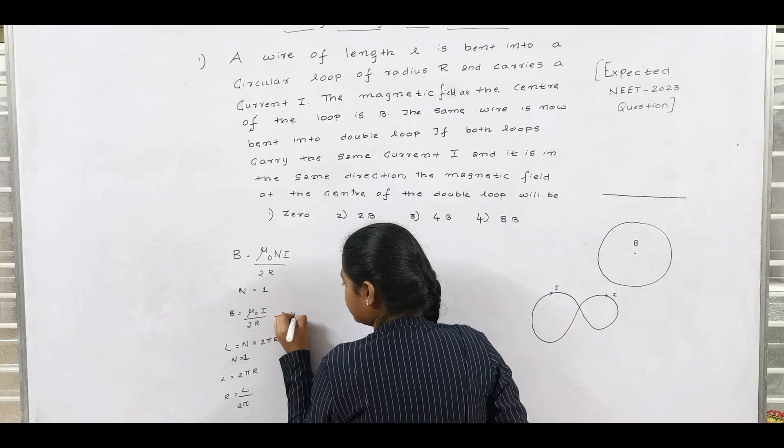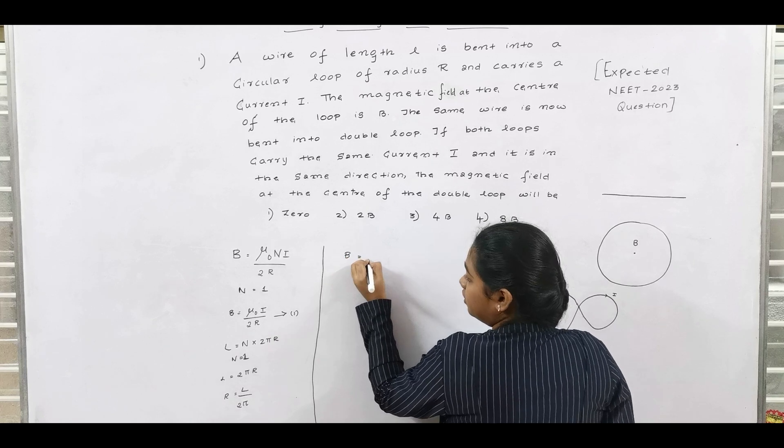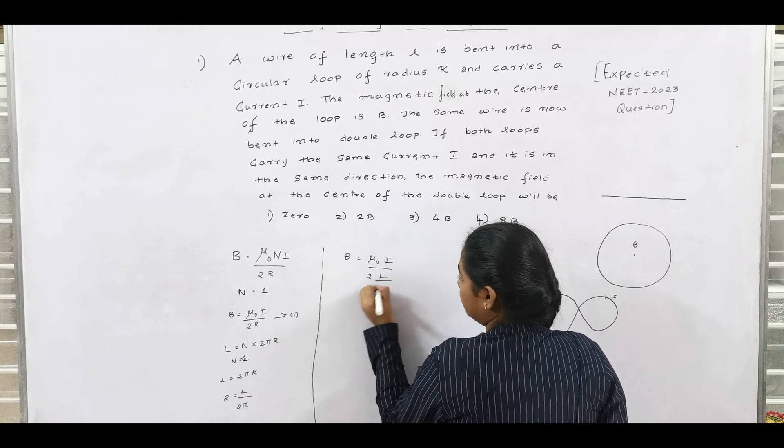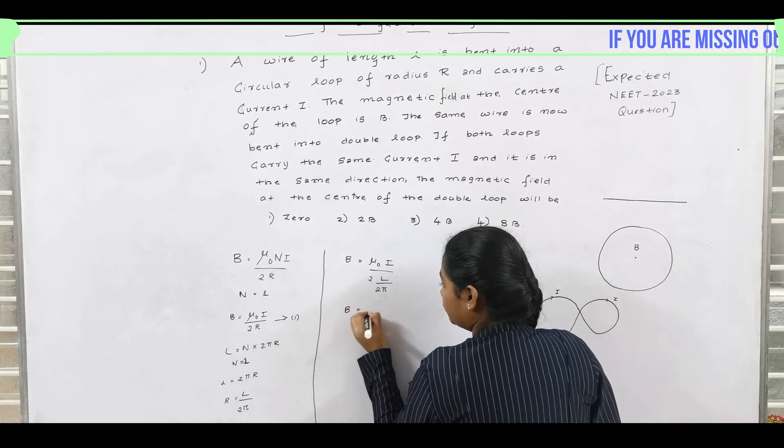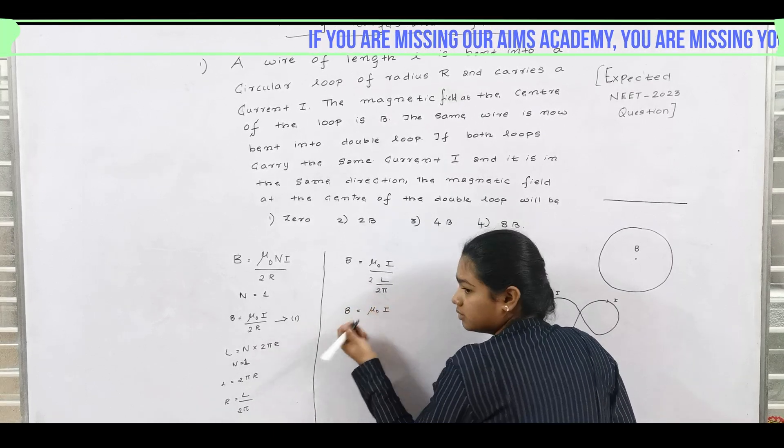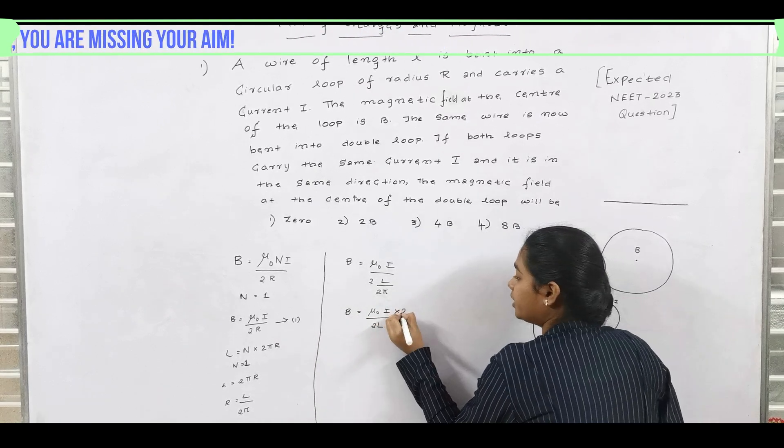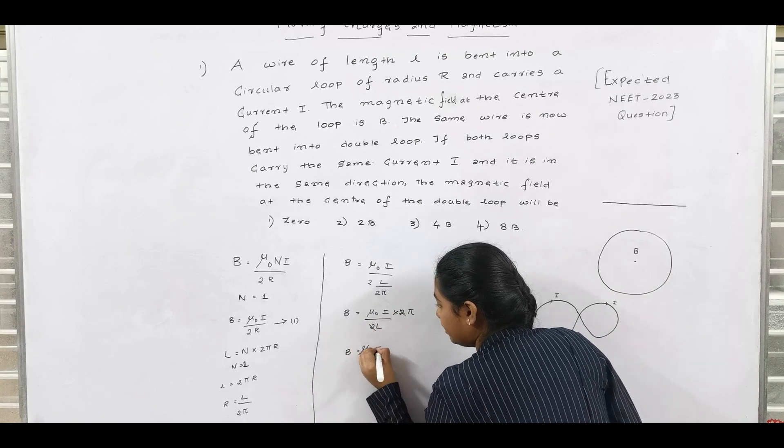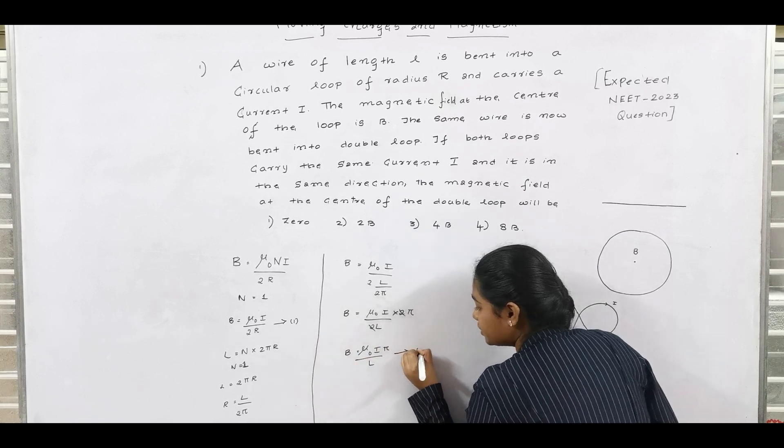Let us take this equation as 1. We get B is equal to mu naught i by 2 into L by 2 pi. 2 and 2 gets cancelled. We get B is equal to mu naught i pi by L. Let us take this as equation 2.